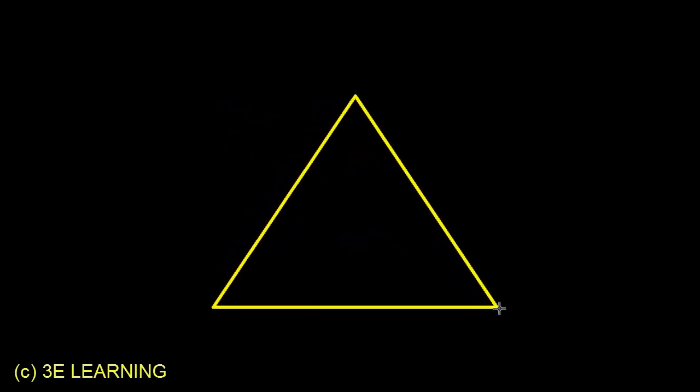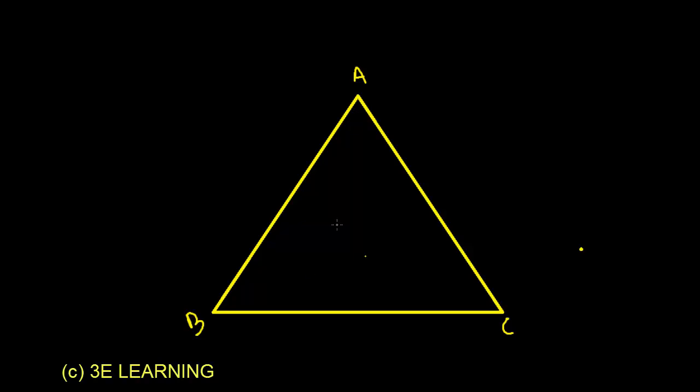In any triangle ABC, the sine formula states that BC over sine A equals CA over sine B equals AB over sine C. This ratio is always constant, equal to 2R, where R is the circumradius for any triangle. I am going to use this concept and also the similarity.